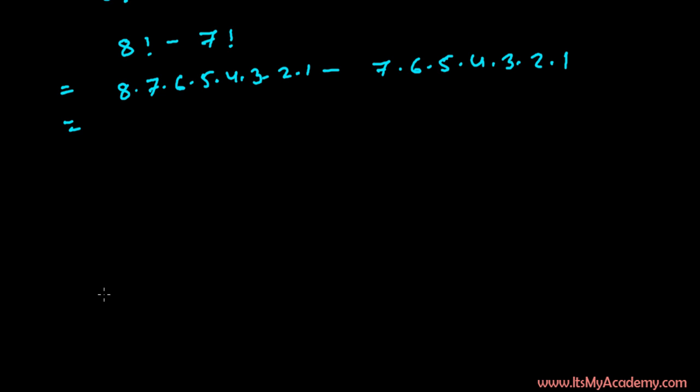I'm going to solve it this way too. I have to calculate this product using my calculator: 8 times 7 times 6 times 5 times 4 times 3 times 2 times 1, which equals 40,320. And if you subtract 5,040, you get 35,280.